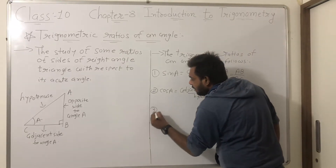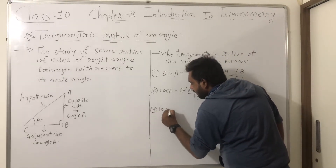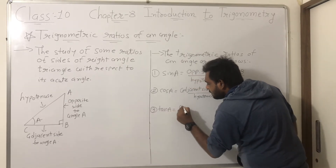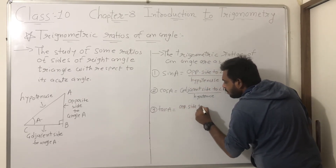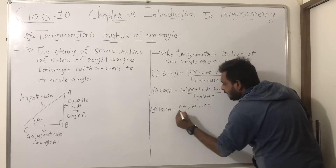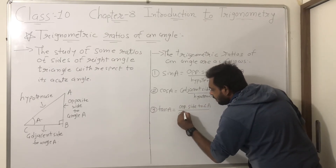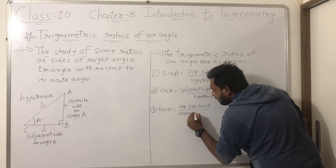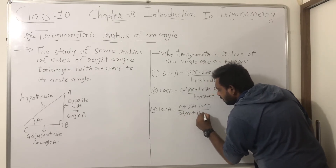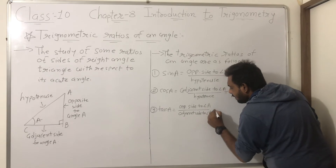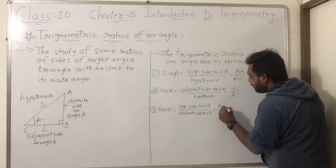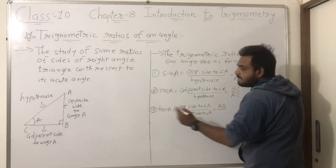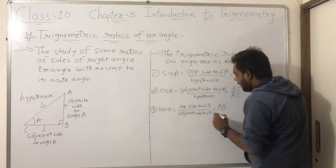The third one is tan A. Tan A is opposite side to angle A divided by adjacent side to angle A. The opposite side to angle A is AB, and the adjacent side to angle A is BC. So tan A equals AB by BC.